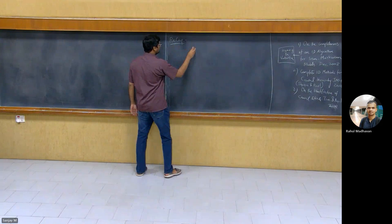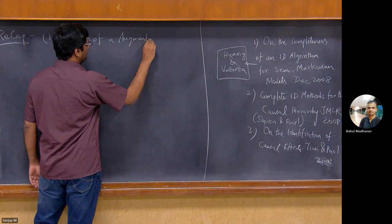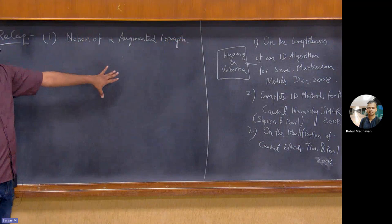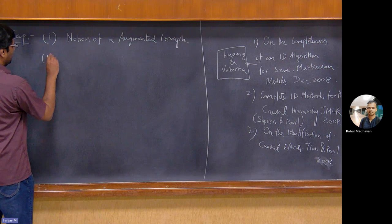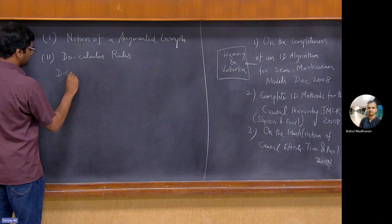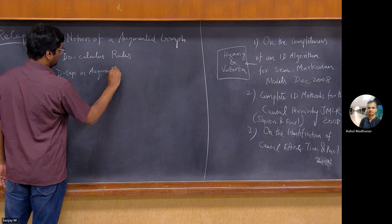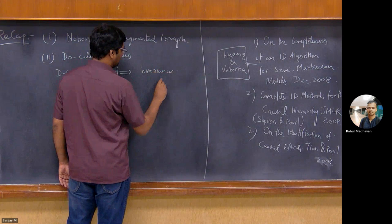Last lecture, we actually saw the notion of an augmented graph. So if you intervene on a set of variables, you just introduce a new node and put directed arrows to wherever you are. It's a very simple operation. And essentially you have two do-calculus rules that say some d-separation statement in the augmented graph implies invariants and conditional independence.